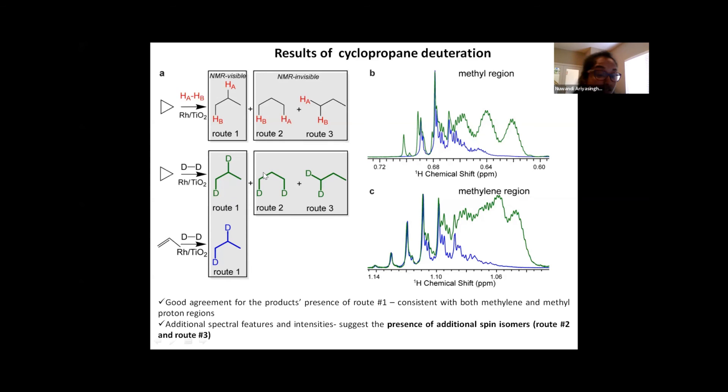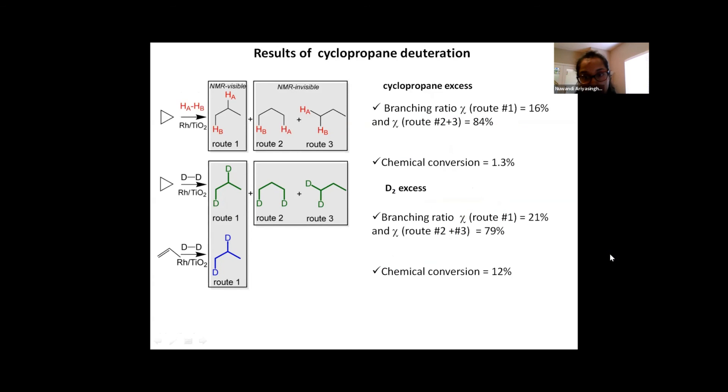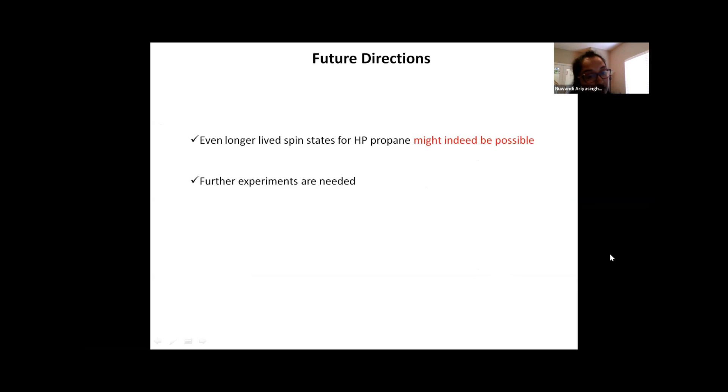So I'm going to emphasize one thing here: we did try to do simulations to see if we can simulate the spectra of all the products obtained from cyclopropane, but it is a complex system and we did not succeed yet. So at the same time, we wanted to see the contribution of each reaction route as a whole by comparing their branching ratios under two different experimental conditions: one with cyclopropane excess and the other with deuterium excess. So the way we approached this was by using the signal intensities to compare the contribution of each route. So the observations were that regardless of the reaction conditions, branching ratios were similar and we indeed see a difference in chemical conversion. So this is still an ongoing project and further experiments and simulations are indeed needed, but we hope that even longer long-lived spin states for hyperpolarized propane might indeed be possible.